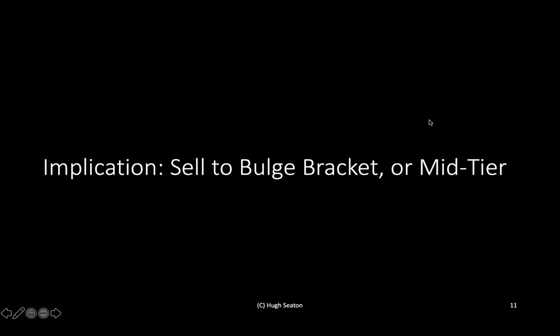The implication of that is strategy: you're going to want to sell to the bulge bracket — the 500 largest companies — or to mid-tier, but you're probably not going to be able to sell to both at once unless you've got significant funding and good momentum. Typically you're able to be good at one or the other, and understanding the quantities of companies we're talking about lets you think a little bit more clearly about that.